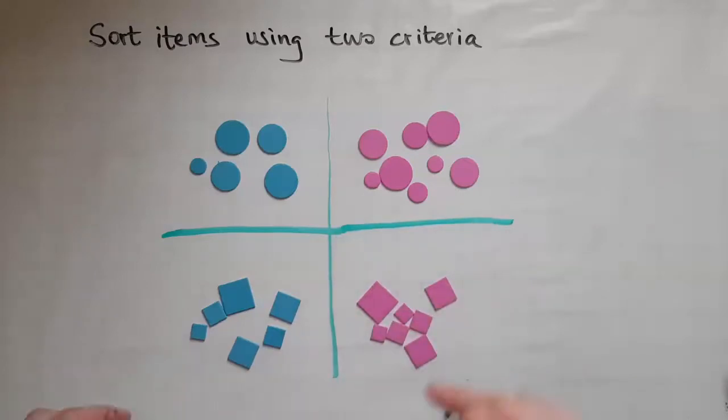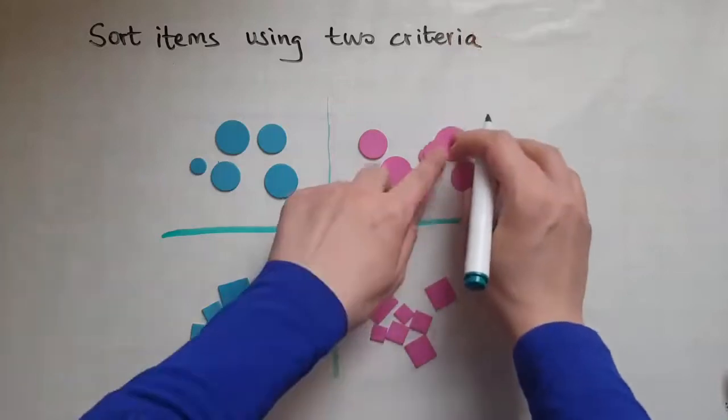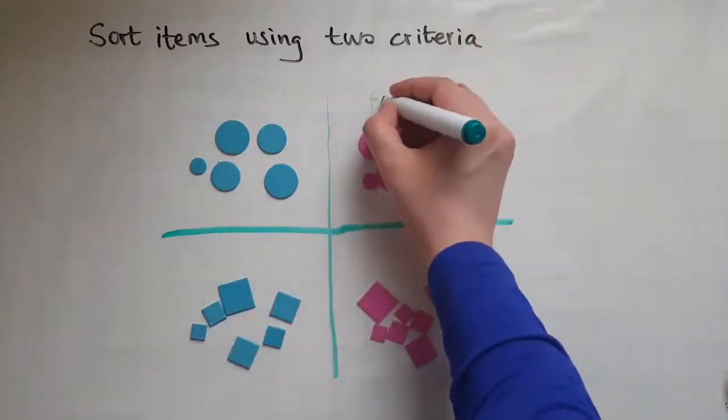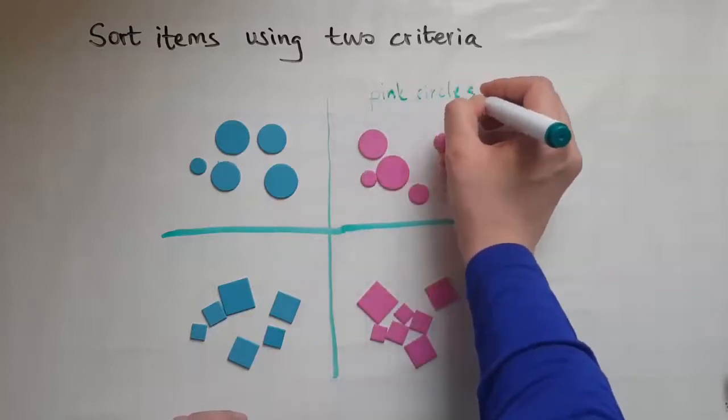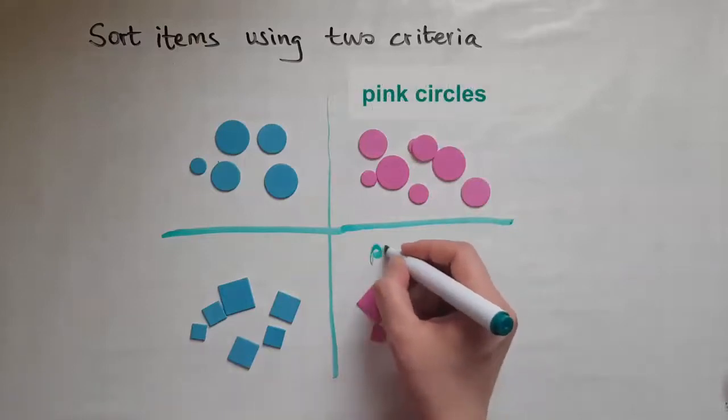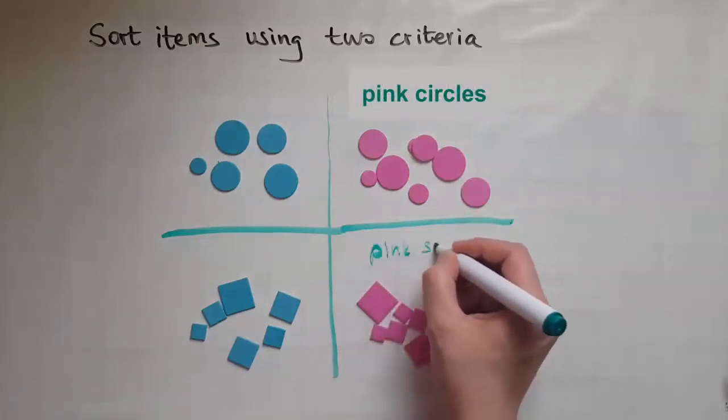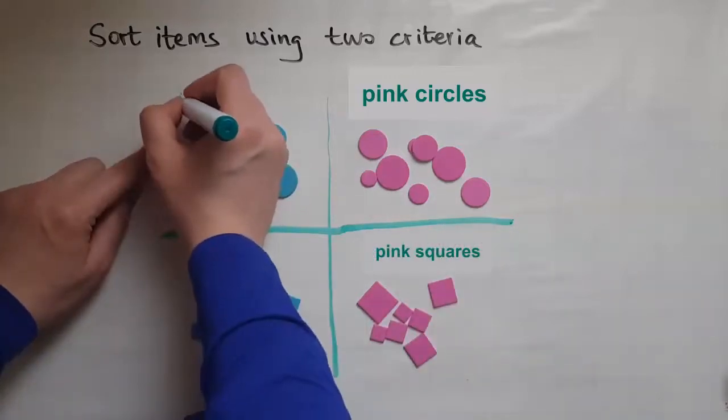So what I have here is pink circles. And here I have pink squares. We have blue circles.